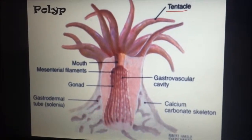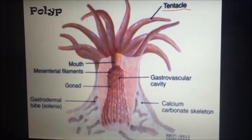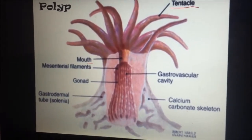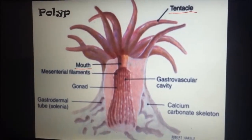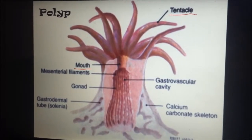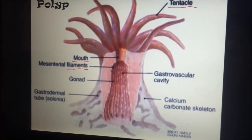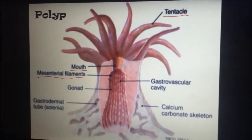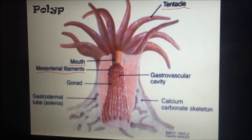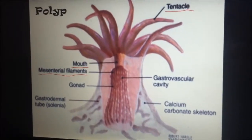The next class we get to is Anthozoa. Anthozoa contains the tentacle. The tentacle is the top structure of this polyp. It is covered with nematocytes and are stinging organs — it stings, so it will hurt if you touch it, so don't touch it. Underneath the tentacle is the mouth. The mouth is responsible for consuming food, and sits underneath the tentacle and right above the mesentarial filaments.